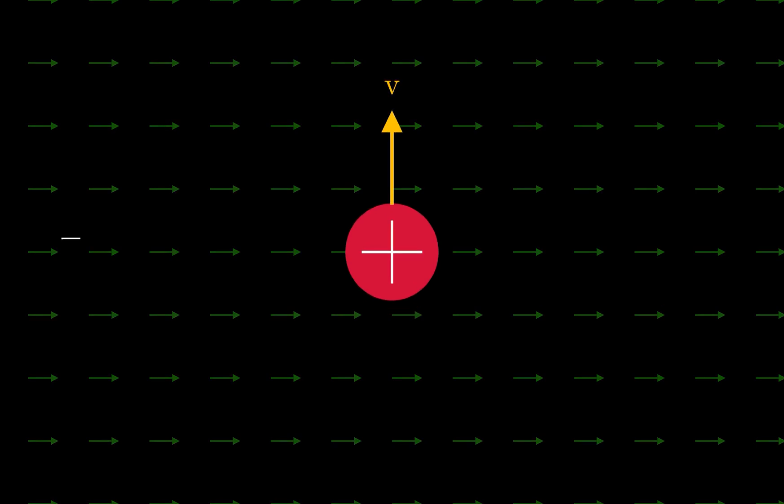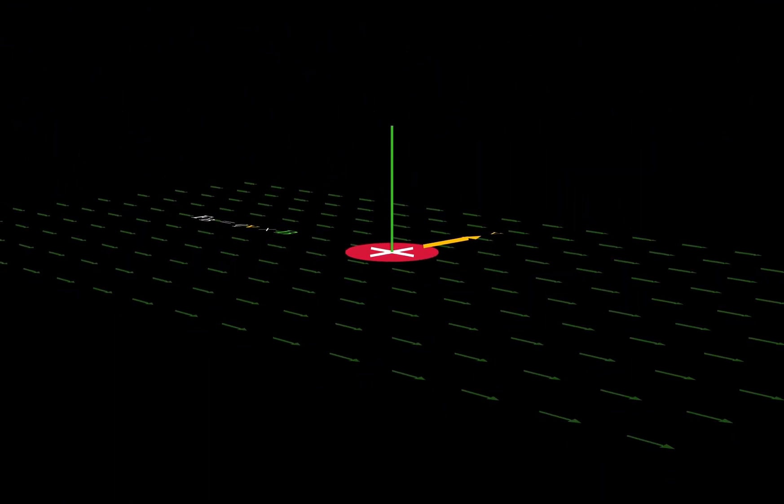According to the Lorentz force law, the force on our positive charge equals the charge of the object times the velocity of the object crossed with the magnetic field at the object's location. That means that the magnetic force on a moving charge will always be perpendicular to the charge's velocity and the field. In this example, the charge experiences a force out of the screen towards us.